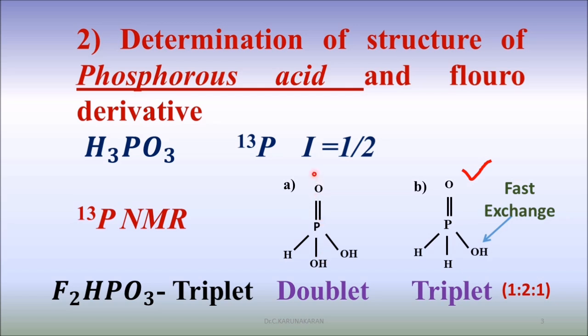In this case, phosphorus-13, I equal to 1/2, and using phosphorus NMR, this compound will give a doublet, whereas this compound will give a triplet.